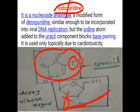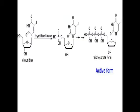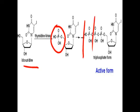Idoxuridine is a nucleoside analogue modified from deoxyuridine. Due to the presence of the iodine atom in the uracil component, it blocks base pairing. It is used only topically because it causes systemic toxicity due to the iodine. By viral thymidyl kinase it is converted into monophosphate, then by cellular kinase into diphosphate and triphosphate. As it contains deoxyribose, it enters DNA synthesis, where base pairing fails due to the iodine atom, causing DNA chain termination.